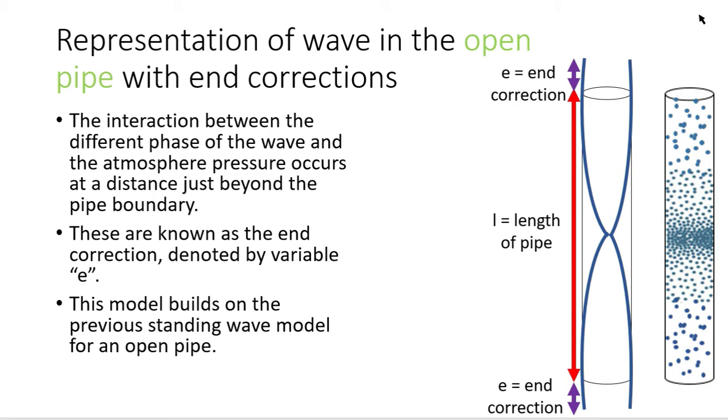Again, with our first model we just assumed that this exchange between the sound waves in the boundaries just occurred there. But in reality no, that's not the case. And because in this instance we have an open pipe, that end correction occurs in both ends.